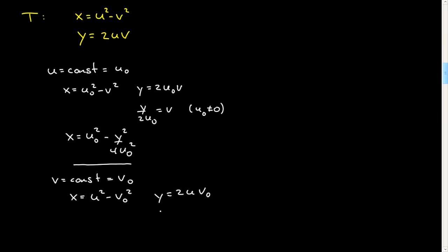Again, if v naught is not equal to 0, I can solve. v naught is not equal to 0. And then substitute, and I get x is equal to y squared over 4v naught squared minus v naught squared.